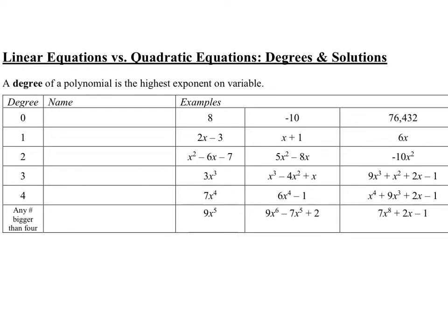Linear equations and quadratic equations have specific names. We've been dealing with polynomials that have specific names based on the degree of a polynomial, which is the highest exponent on the variable. Numbers like 8, negative 10, and 76,432 have a degree of 0 because there are no variables — you could write them as x to the 0 power, but since x to the 0 equals 1, they simplify back to just the number.